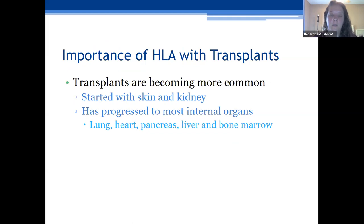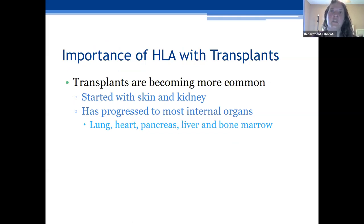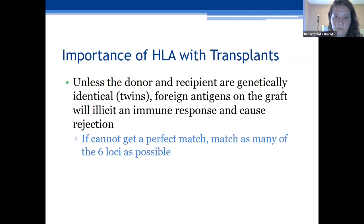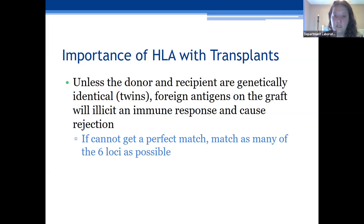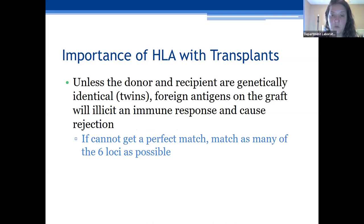We're seeing a lot more transplants being done. It started first with skin grafts, then moved on to kidney transplants, and now they can transplant pretty much any type of organ — lung, heart, pancreas, liver, and of course bone marrow. Unless the donor and recipient are genetically identical twins with the same HLA, foreign antigens on the graft will elicit an immune response, causing graft versus host disease. If you can't get a perfect match, it's important to match as many as possible.